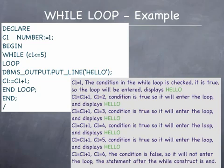On this slide is a program that could have been written to display the word hello on the screen five times using the while construct. I will read the program out to you. It begins with declare followed by a numeric variable being declared called c1, set to an initial value of 1.